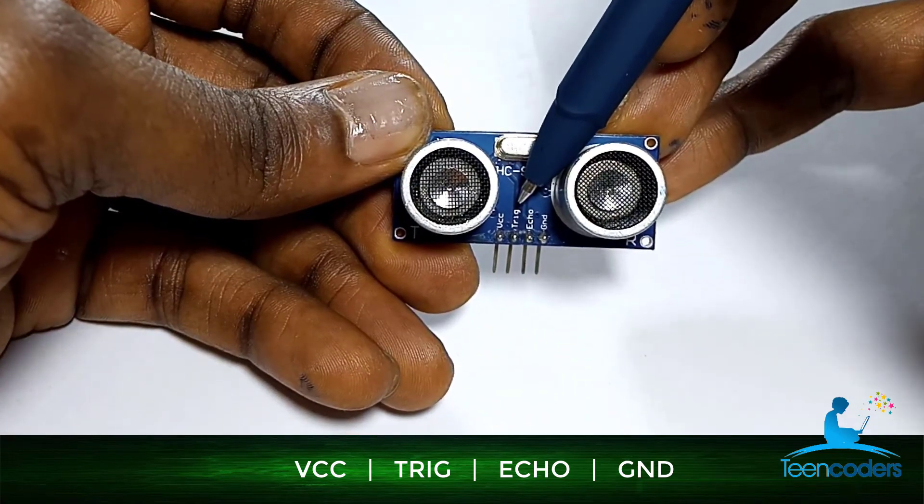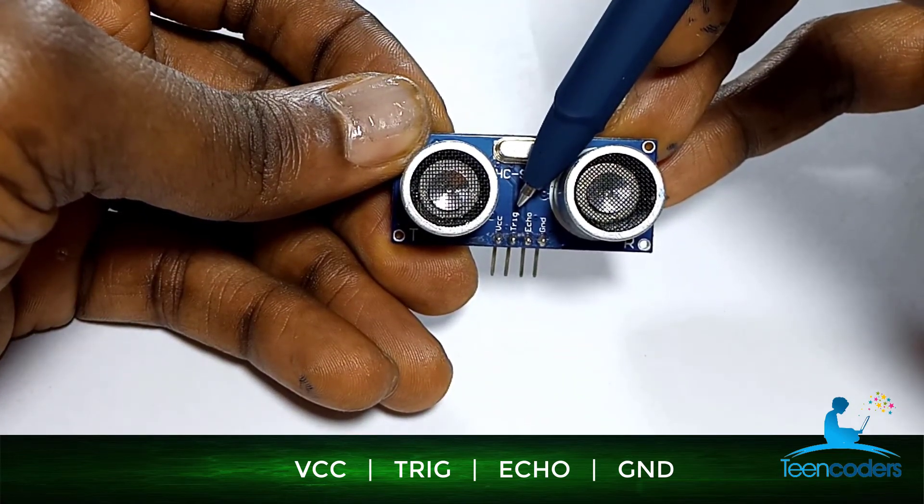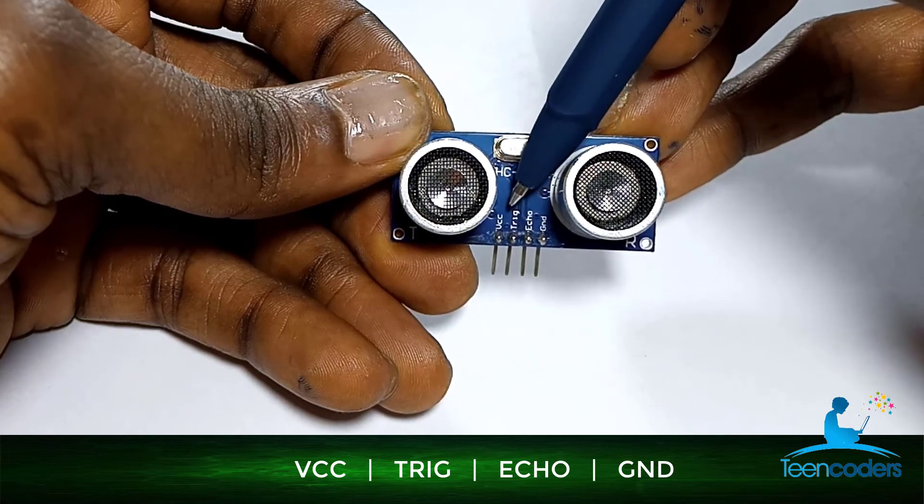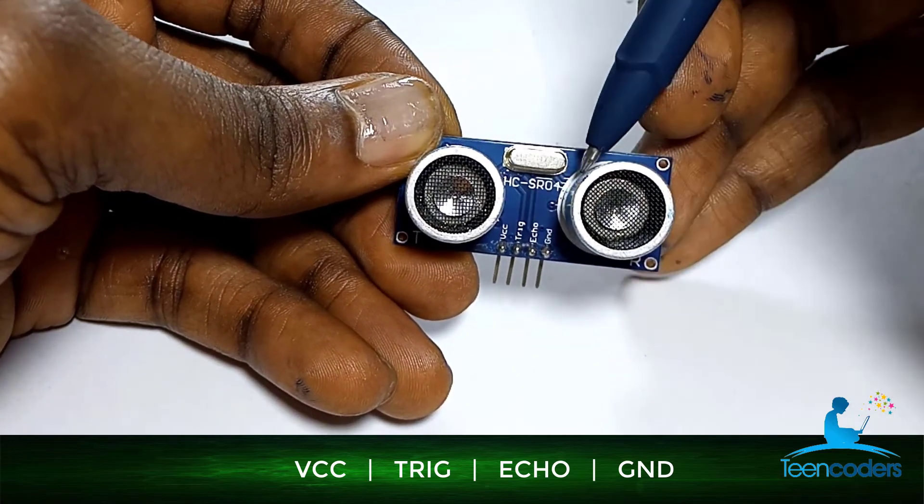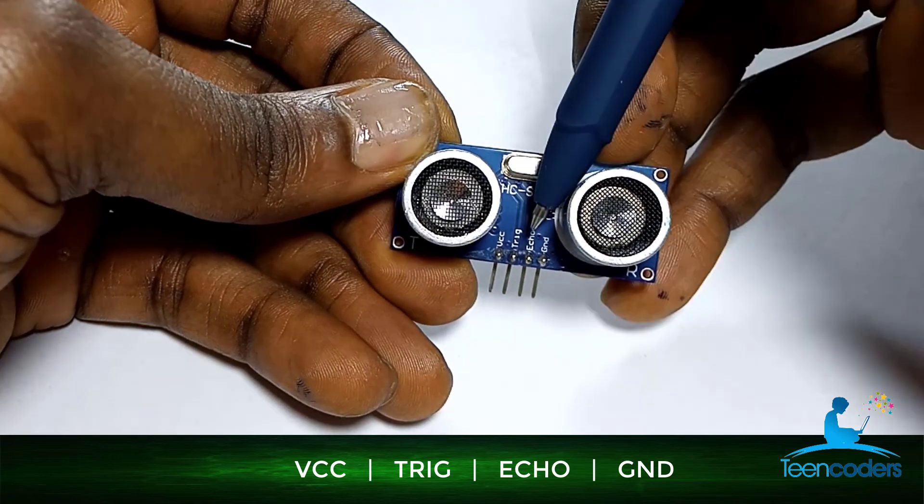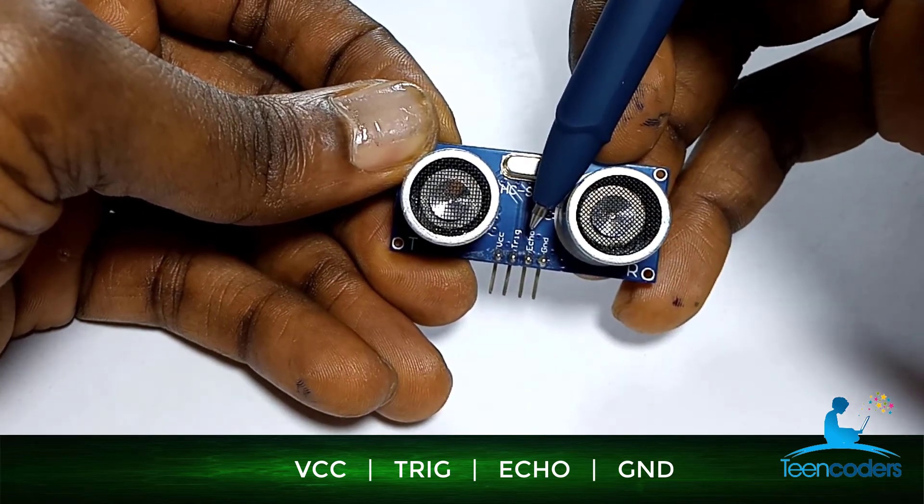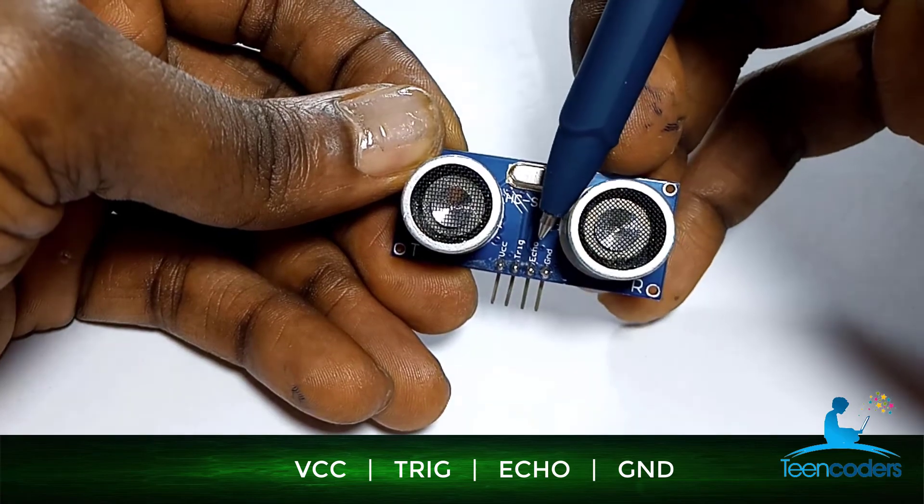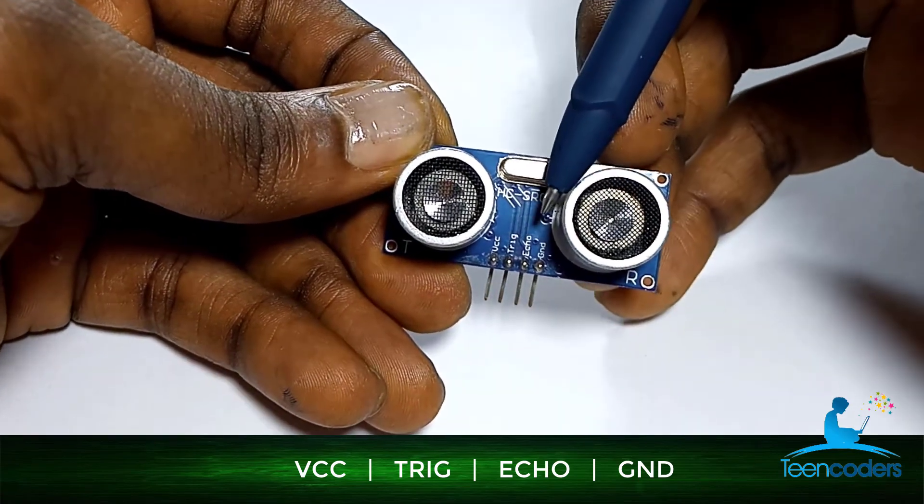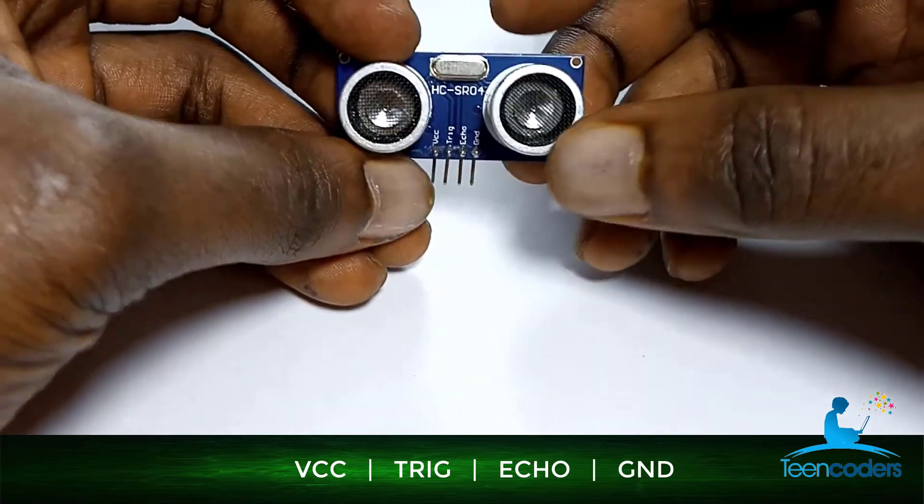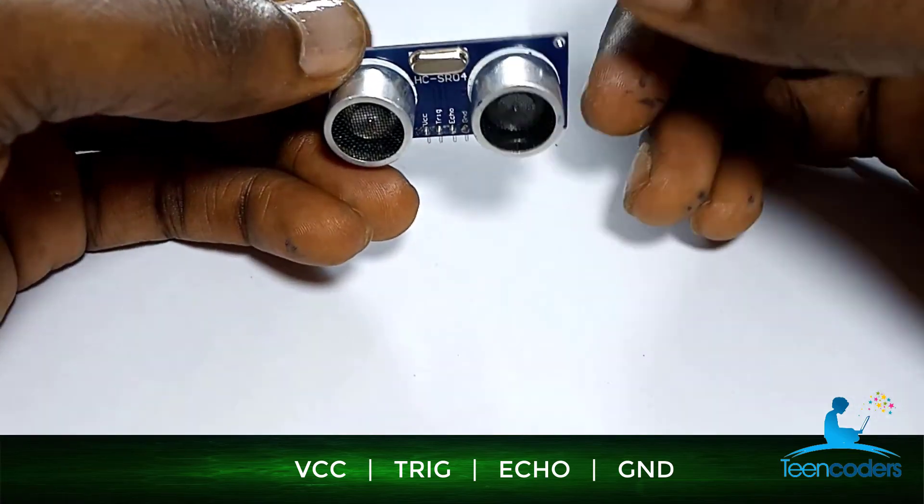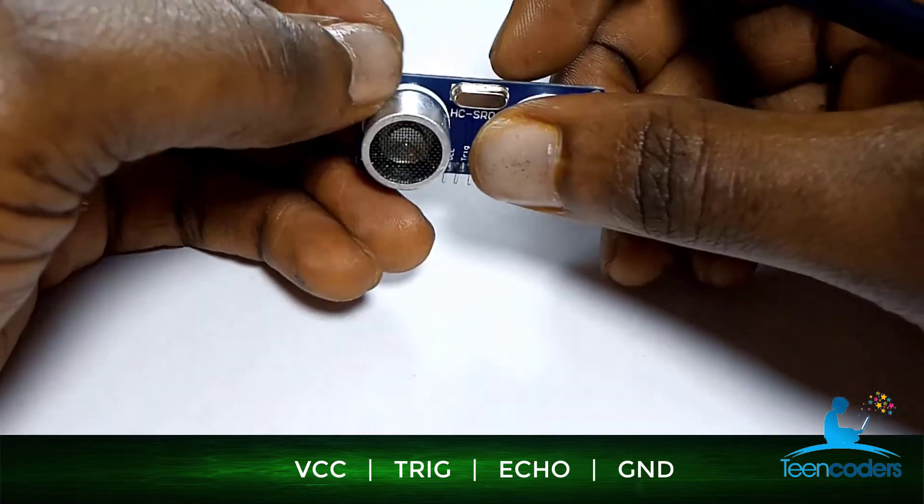The trig is what gets the electrical signal from the Arduino and sends it to the transmitter. The echo is what receives the sound waves from the receiver, and then sends it back to the Arduino. Then the ground is connected to the ground of the Arduino. Having this understanding, we look at some projects we can create using this ultrasonic sensor.